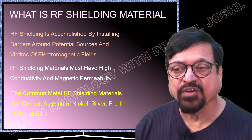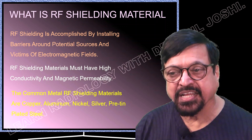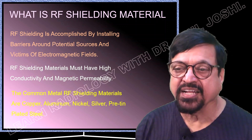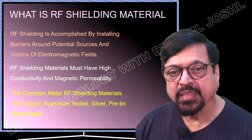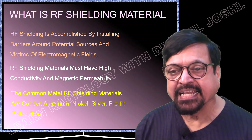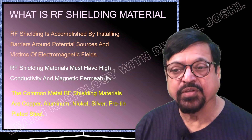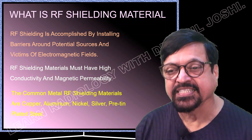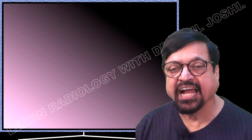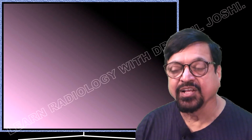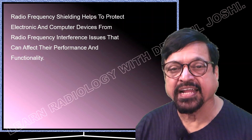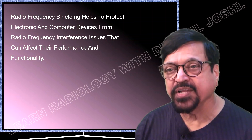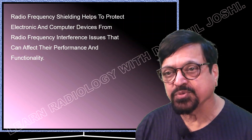Common materials for RF shielding include copper, aluminum, nickel silver, and pre-tinned plate steel sheets. The most easily available and economical option is pre-tinned plated steel. However, copper is most commonly used because of its better conducting capacity and because only a thin sheet is needed. Copper is preferred also because it can be recycled — at the end of the MRI cabin's life, it can be sold as scrap. Radio frequency shielding helps protect electronic and computer devices from radio frequency interference that can affect their performance and function.